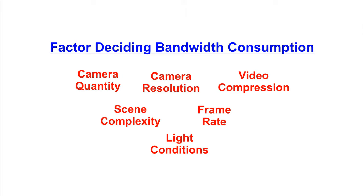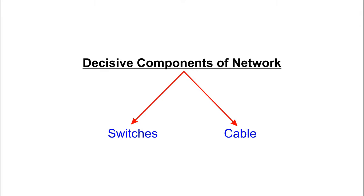We need to account for all these factors — video compression, light conditions, scene complexity, frame rates, and so on — while deciding the capacity of our network. The components that decide the bandwidth a network will support are broadly network switches and cables.